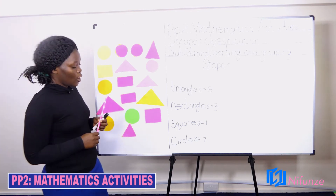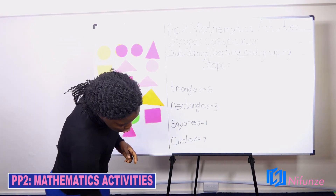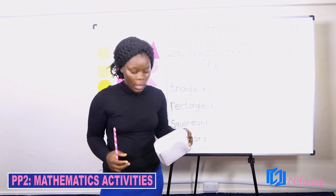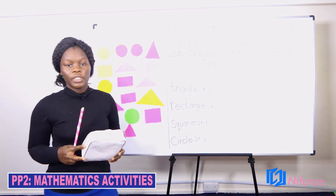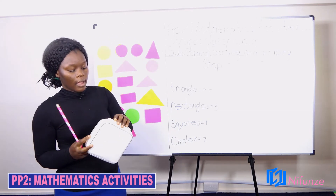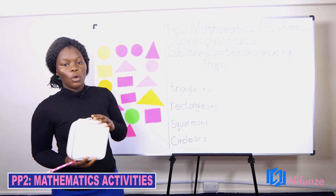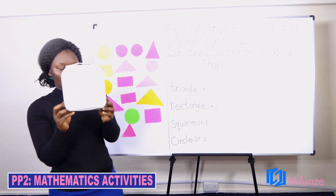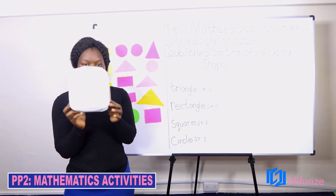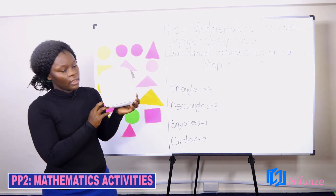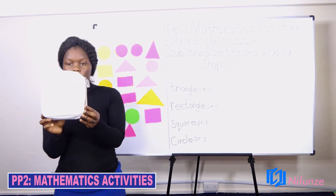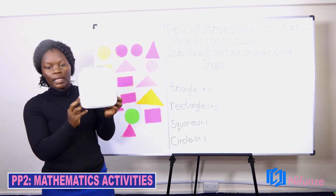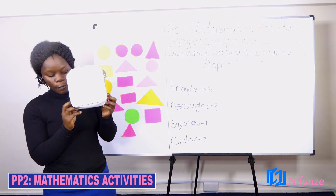After that, the teacher is also going to show you some items here which represent our shapes. I'll be holding a shape — you tell me what shape it is. Are you able to see this shape? What shape do you think this is, class? Good. This is a square shape.